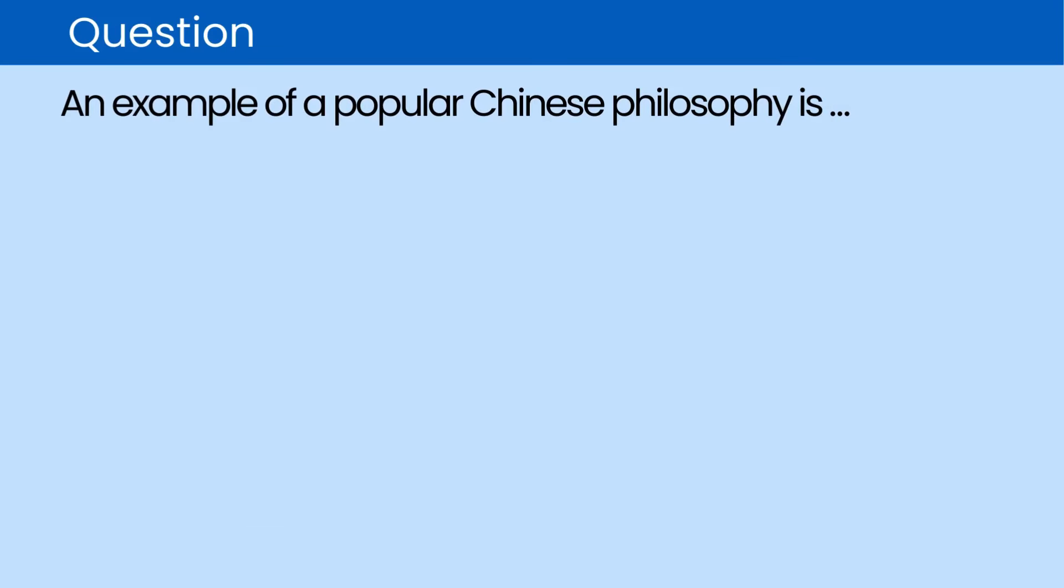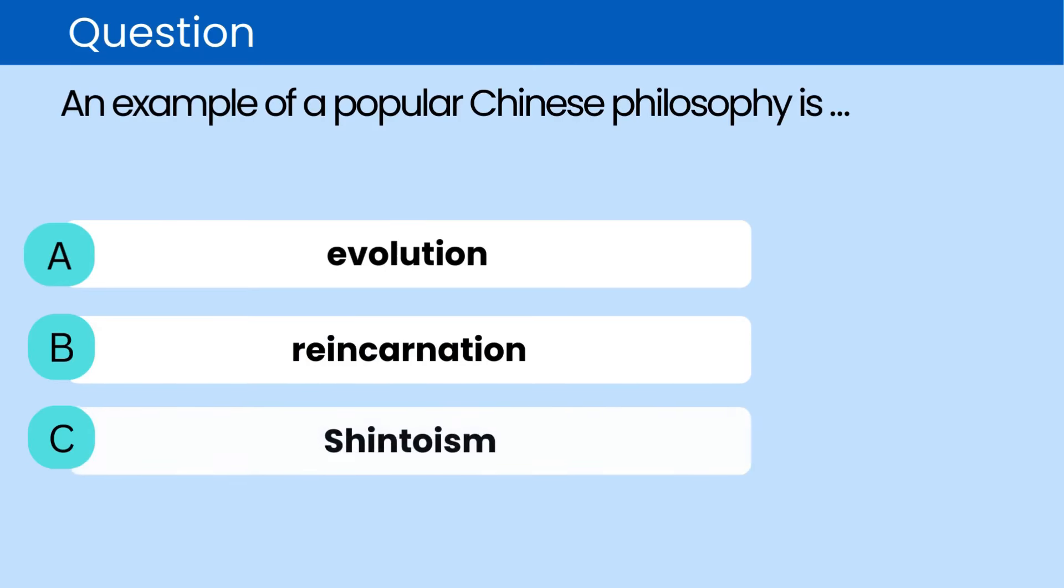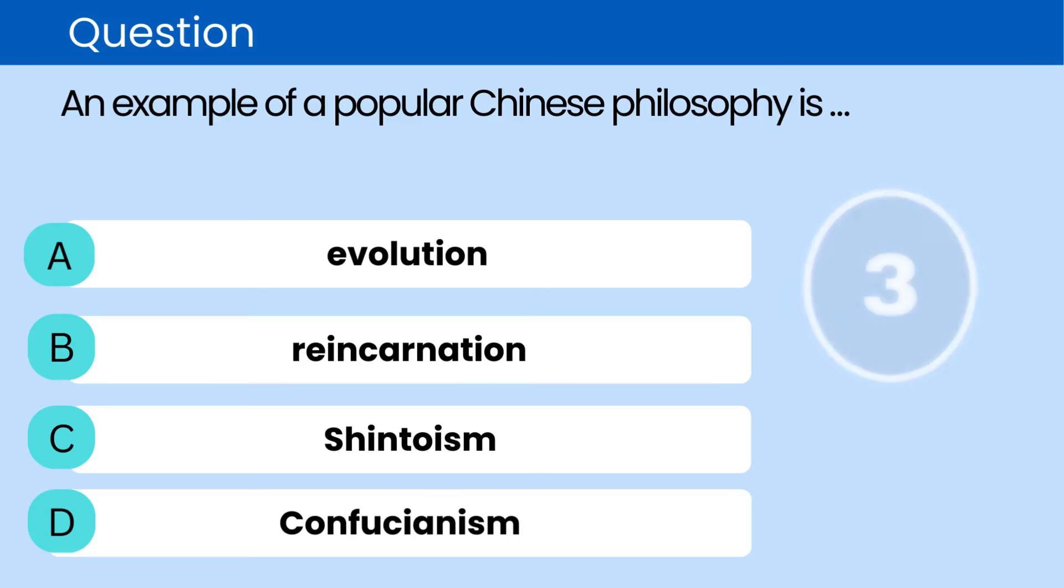Question: An example of a popular Chinese philosophy is. The correct answer is D. Confucianism.